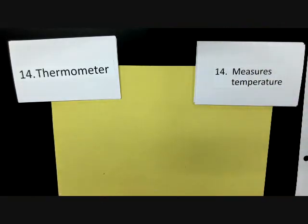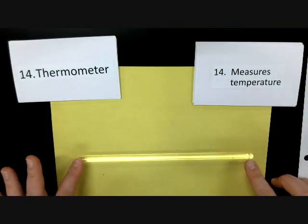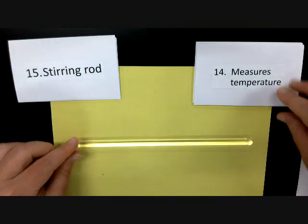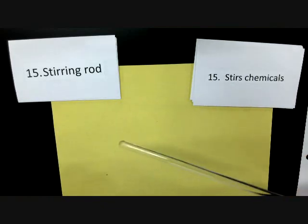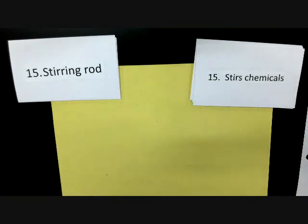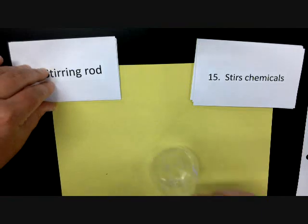The next one in the picture looks very similar to the thermometer, but it's not a thermometer — it's just a piece of glass. This is called a stirring rod. Some people call it a stirring stick; stirring rod is fine too. What does it do? It stirs chemicals. Whenever you have to mix chemicals, stirring rods do the job for you.